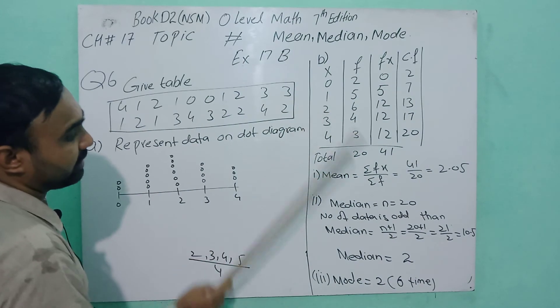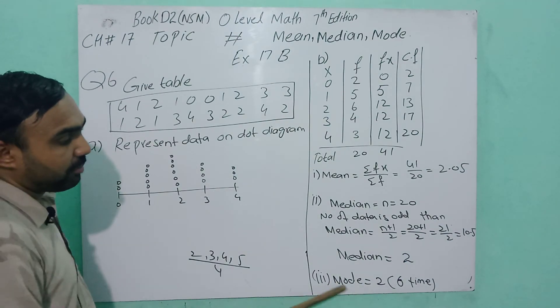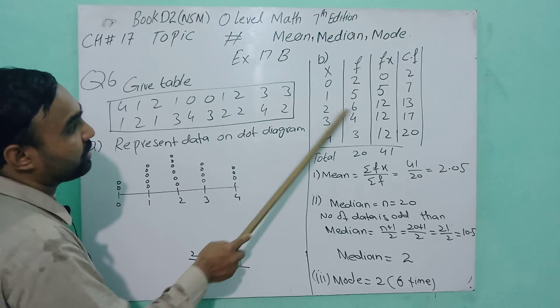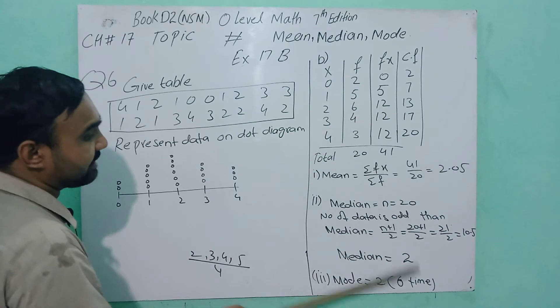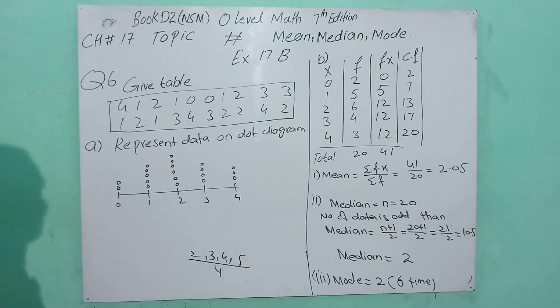The mode is 2 because 2 appears 6 times. Question number B complete.